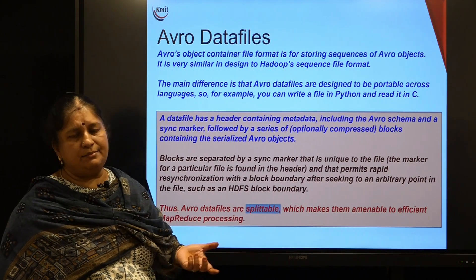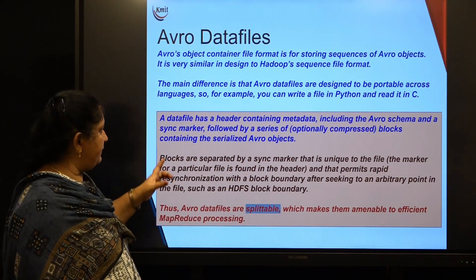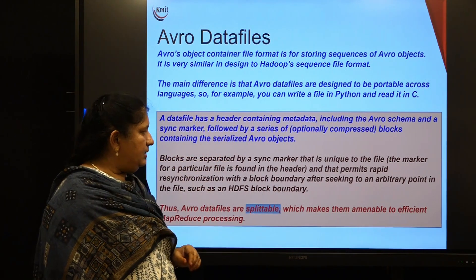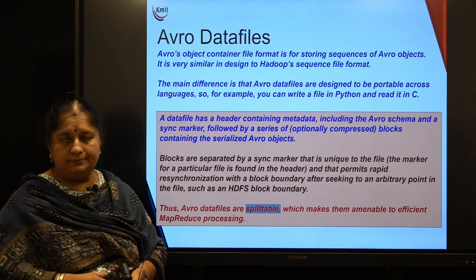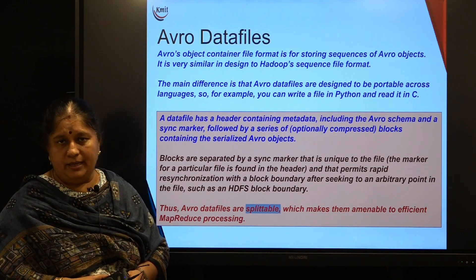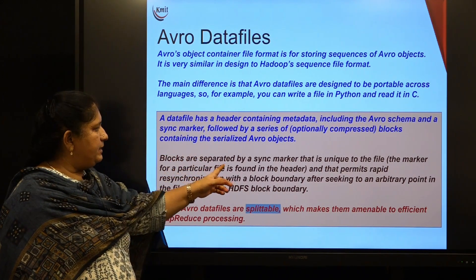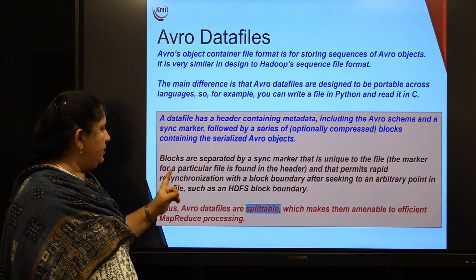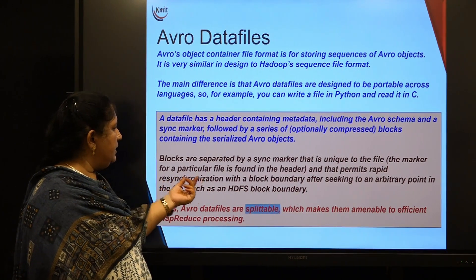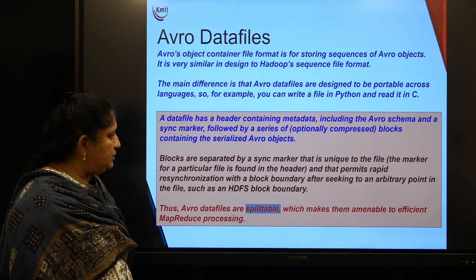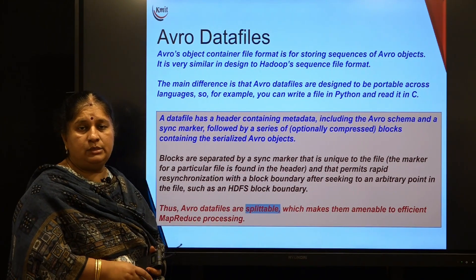Sometimes we might use compressed data, sometimes not — compression is optional and not mandatory. The header contains metadata including the schema and a sync marker. If we are splitting the file into blocks, we will have sync markers to indicate where a block begins. The file contains all the serialized Avro objects, and blocks are separated by a sync marker unique to every file. The marker is found in the header and permits rapid resynchronization with a block boundary after seeking to an arbitrary point in the file, such as an HDFS block boundary.